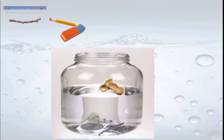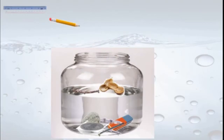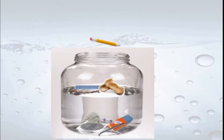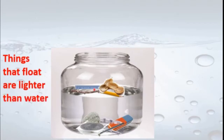Then I put an eraser, a little twig of a tree, a plastic scale or ruler, and a pencil in the water. You can see that some materials are floating on the water and some are sinking. Things that float are lighter than water — plastic ruler, groundnut shells, a little twig, and a pencil are floating.